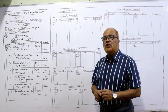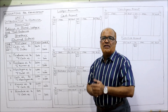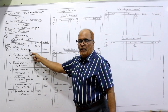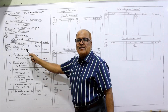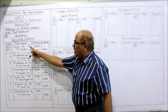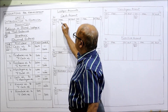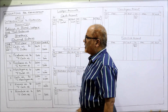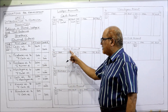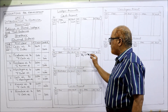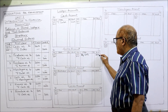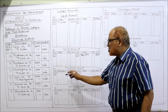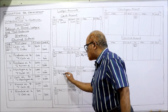Now I am explaining the posting. Cash account Dr. to Sales — the cash account should be debited on the debit side: 'To Sales — 2600', date is 1st March. The sales account should be credited on the credit side: 'By Cash — 2600', date is 1st. First transaction posted.